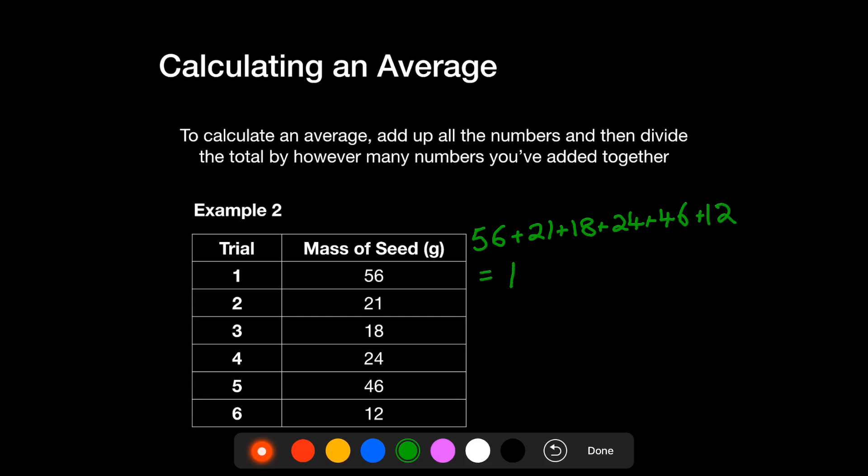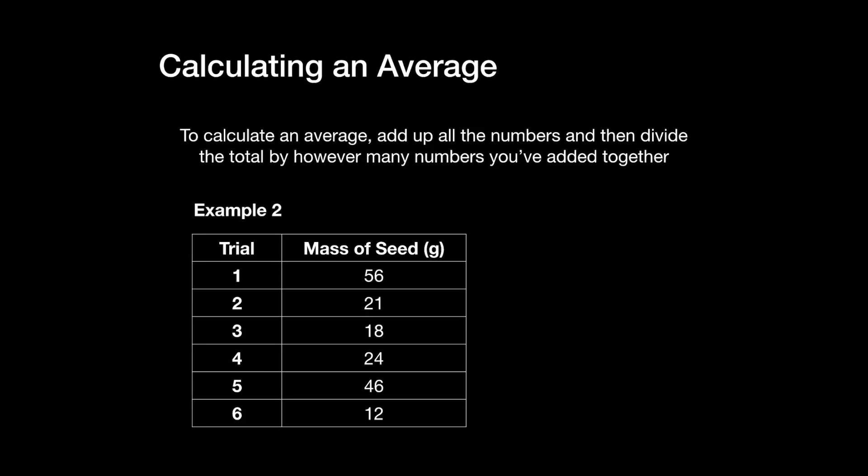Again, you're just getting the total, and you find out you have 177 as your answer. This time, instead of dividing by five, we have six trials. So we divide it by six in order to get an answer of 29.5. So that is your average for the mass of seeds. It's the same equation you use every time, follow the same rules, and that is how you take an average.